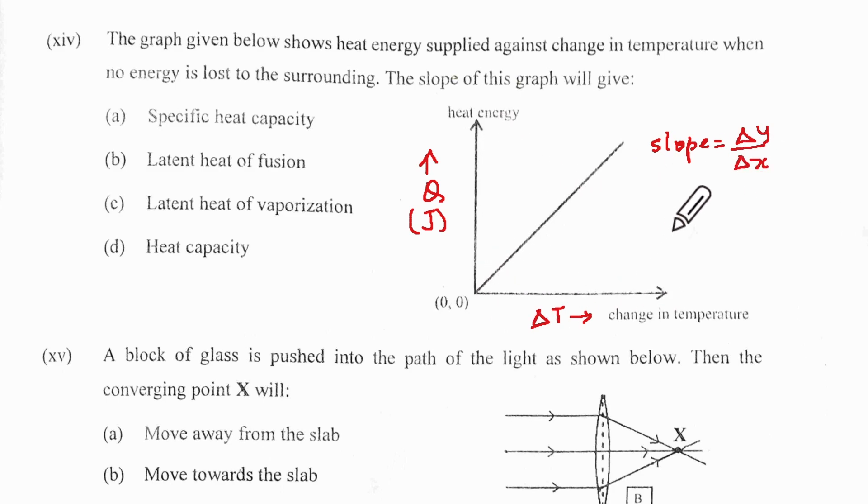Now delta Y is going to be Q and delta T is on the X axis. If you can't remember what quantity this is, just remember Q is MC delta T. And that upon delta T will have this getting cancelled and we will have M times C, which is by definition the heat capacity denoted by C dash. So the correct option is D.